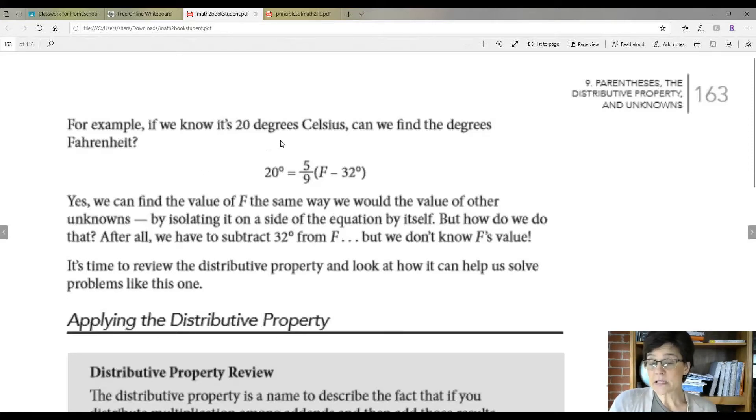If you knew that it was 20 degrees Celsius, could we find the degrees Fahrenheit? Well, you know what C equals and you know what F equals. So you just plug in the numbers that you know. We know that C is 20 degrees and we know this is the rest of the formula.